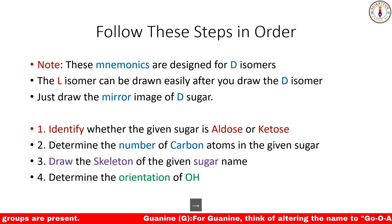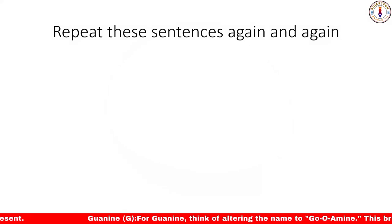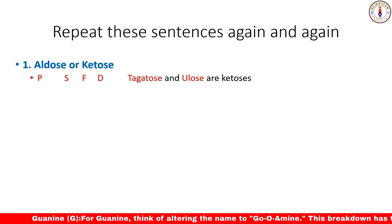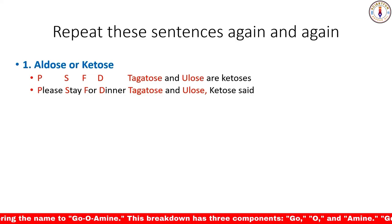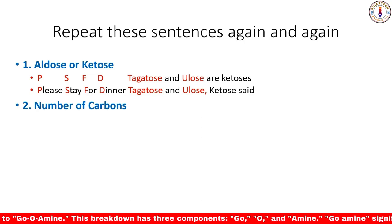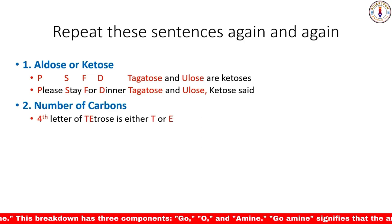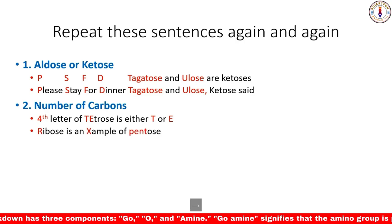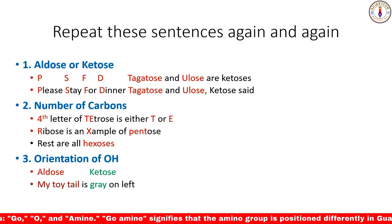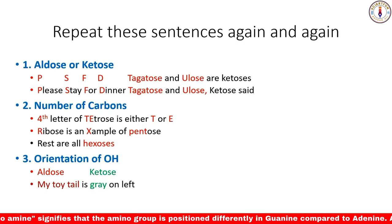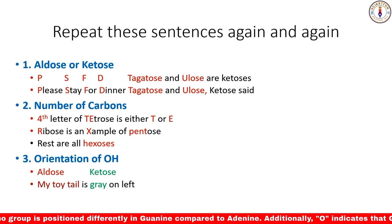Now memorize these sentences: PSFD, tagatose and eulose are ketoses. The mnemonic for PSFD is 'Please Stay For Dinner — tagatose and eulose, ketose said.' For the number of carbon atoms, memorize: 'Fourth letter of tetroses is either T or R; ribose is an example of pentose; rest are all hexoses.' For orientation of hydroxyl groups, memorize: 'My toy tail is gray on the left.' The red-highlighted 'my toy tail' is for aldoses and 'gray' is for ketoses.